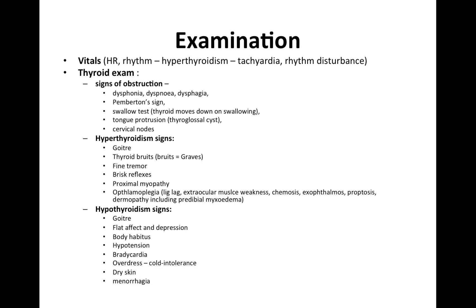Further hyperthyroid findings include tremor, brisk reflexes, and proximal myopathy — difficulty getting out of chairs. Ophthalmic signs seen in Graves' disease include lid lag, extraocular muscle weakness, chemosis, exophthalmos, proptosis, and dermopathy including pre-tibial myxedema.